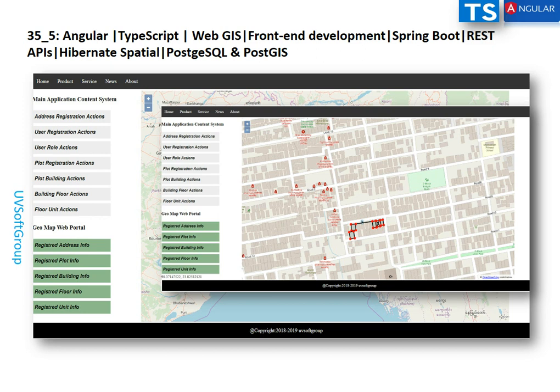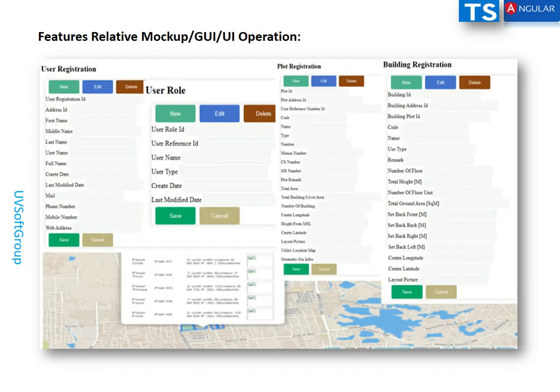This is the same application built in my previous screencasts — around episodes 20 to 34 — using Thymeleaf-based Java view technology. You can follow those to get a clear idea of how Thymeleaf handles the view layer, and now see how Angular and TypeScript handle the same functionality in the same enterprise application.